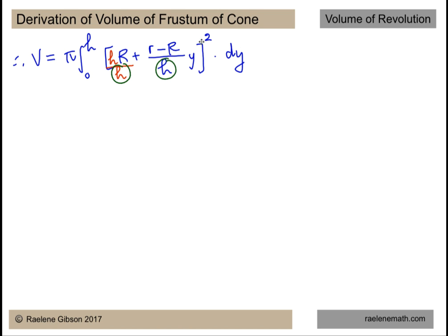So when we expand this we're going to get a common denominator of h squared. I'm going to take that common factor, that common denominator of h squared and factor it out directly in front of the integral in one step. So now we have a simpler looking integrand, the function to be integrated, of [R + (r-R)y/h]² times dy.